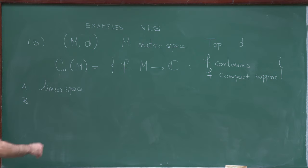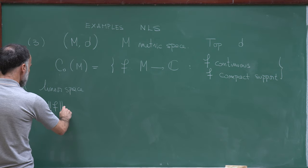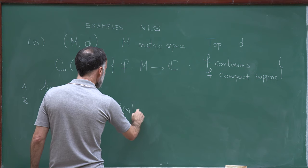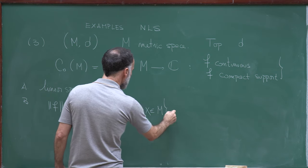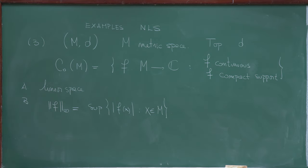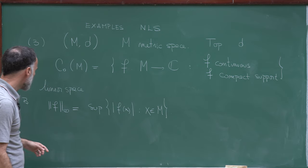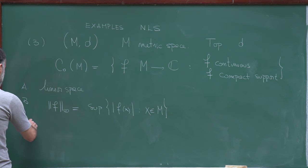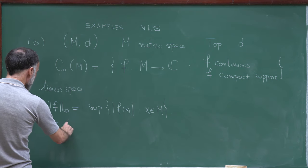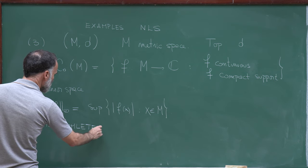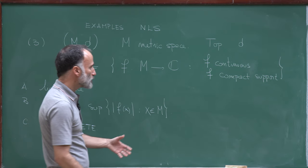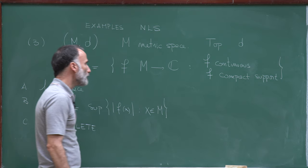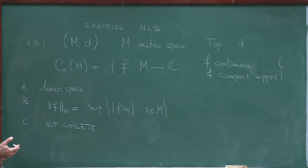Now I define a norm: the norm of a function f is the infinity norm, which is the supremum of |f(x)| for x in M. This is finite because f has compact support. I leave it to you to check that this satisfies the three properties of a norm — that's straightforward. However, this space is not complete. If you take a sequence of functions with compact support, the limit may not have compact support.